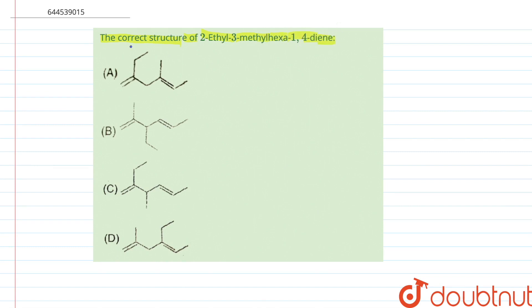So if we try to make the correct structure for this one, it is hexa-1,4-diene. So the parent chain has to be a 6 carbon chain: 1, 2, 3, 4, 5, and 6.